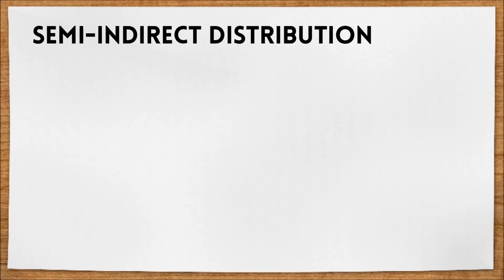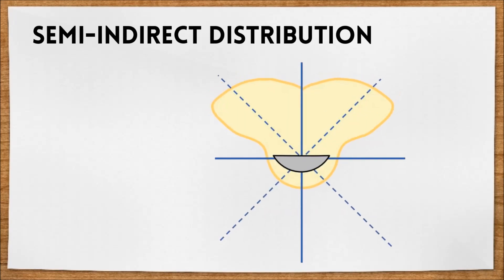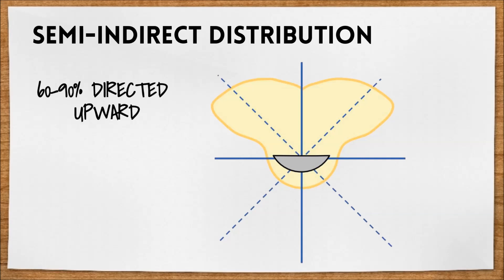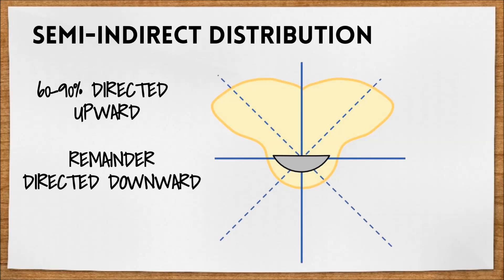Moving in the opposite direction, we have semi-indirect distribution, which is represented like this. We can see that now 60 to 90% of the light is directed upward, with the remainder of the light directed downward.